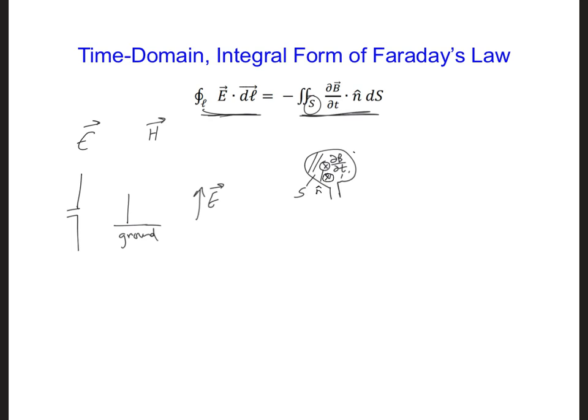So around the outside here would be the contour line L, over which we would integrate the E fields. And that will result in a potential difference across the two terminals of the loop antenna.